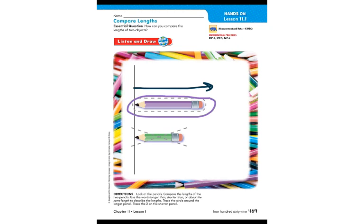Now point to the shorter pencil. I'm going to write an X on the shorter pencil. Remember that this green pencil doesn't come out as far as the purple pencil does, so the green pencil is the shorter pencil. Okay, let's turn the page.